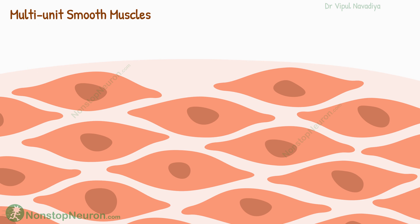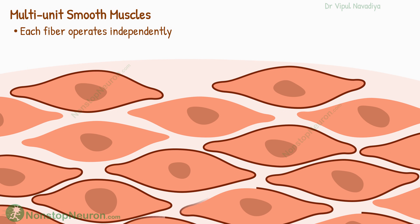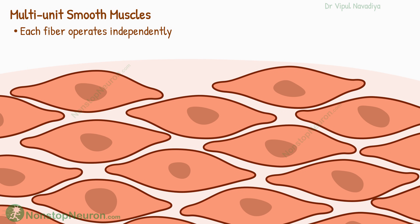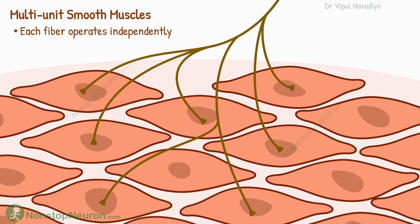In multi-unit smooth muscle, each fiber operates independently. Each muscle fiber is covered by a layer of basement membrane-like substance that separates fibers from one another. Also, each fiber is innervated by a single nerve ending. Because of this, individual fibers can operate independently of each other — it's like there are multiple contractile units within a single muscle, which is why they are called multi-unit smooth muscles. This intricate detailing allows fine control of the muscle. Examples include muscles in the iris and ciliary body, and the piloerector muscle of the skin.